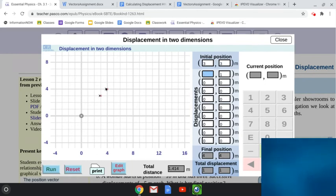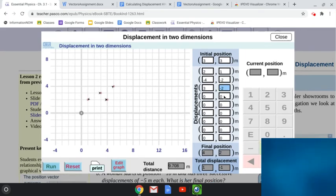So D1 is 2, 1. D2 is negative 4, negative 2. And D3 is going to be 3, negative 2. And make sure you press enter. Let's check what we have.